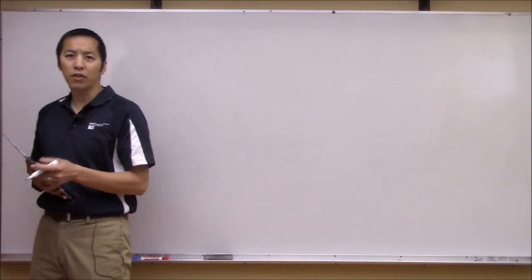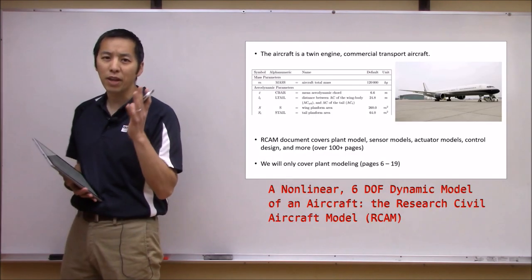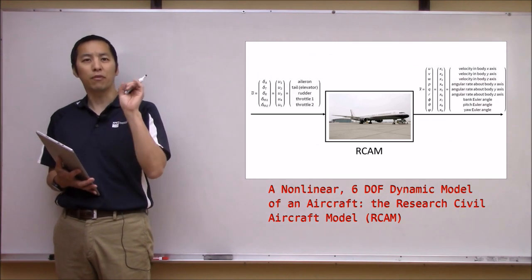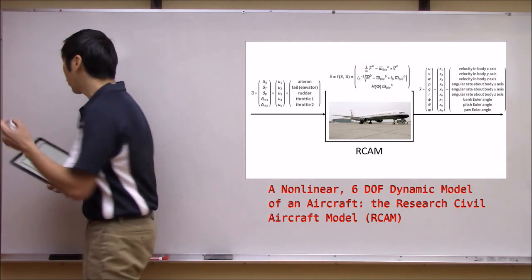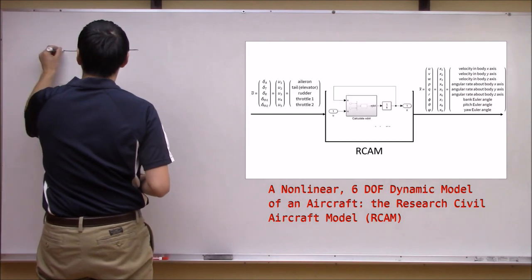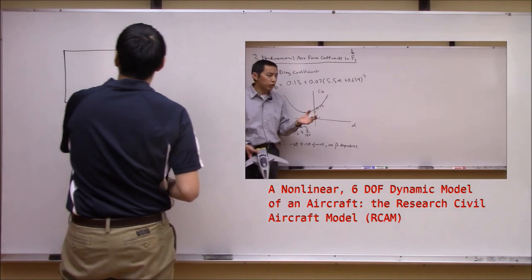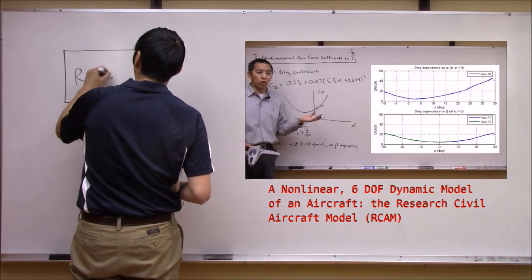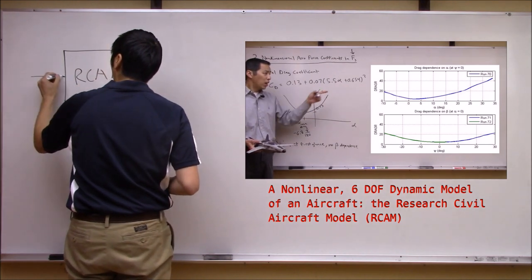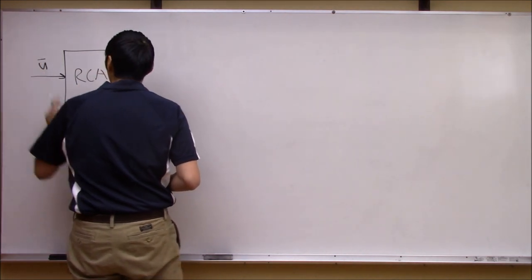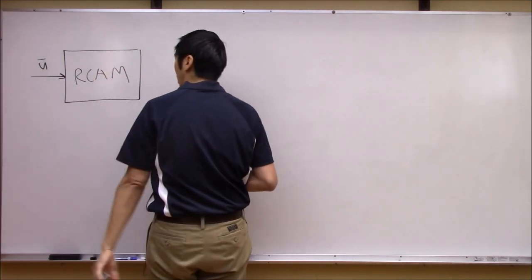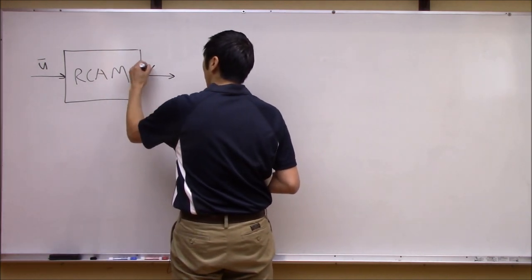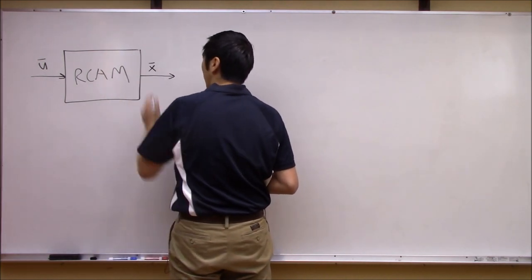If you recall where we left off, we had developed a six degree of freedom rigid body flat earth simulation of an aircraft - specifically the Research Civil Aircraft Model, or RCAM model. This model had a bunch of control surface deflection inputs U, and then what it output was a state vector X.